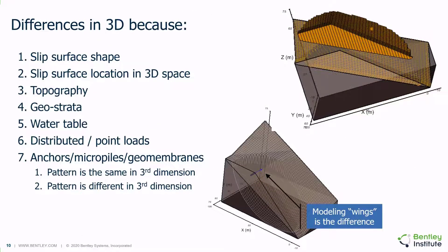It's helpful to go over the differences between a 2D and a 3D analysis. The differences may be caused by a number of factors, which include the slip surface shape, its spatial location, topography, the layering of geostrata layers, the water table, the application of distributed or point loads, and the placement of anchors, micropiles, or geomembranes in the slope. In this video, we will focus on the differences caused by distributed or point loads and the effect of anchors, geomembranes, and micropiles on the solution.